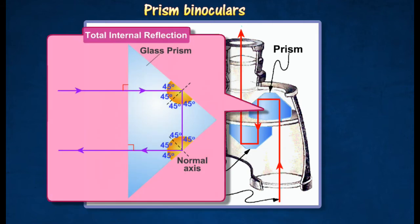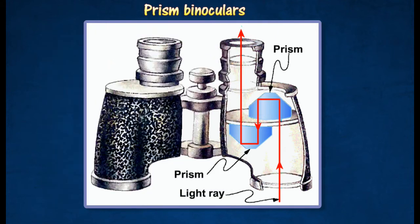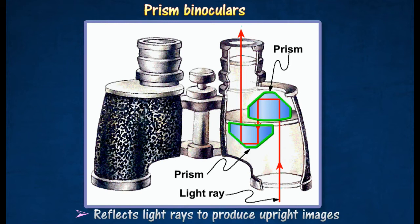This angle of incidence is greater than the critical angle of glass, which is 42 degrees, so the rays undergo total internal reflection twice, and emerge from the prism as parallel rays in the opposite direction. Prisms are used in binoculars to shorten the length between the eyepiece lens and objective lens, and to reflect light rays to produce upright images.